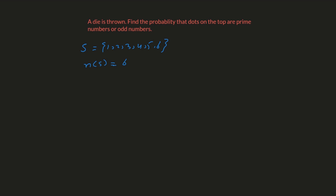The number of elements in the sample space is six. In the next step we figure out the events. We need to find the probability that dots on the top are prime numbers or odd numbers, so there are two events. For prime numbers — let's call it event A — the prime numbers in the sample space are two, three, and five.